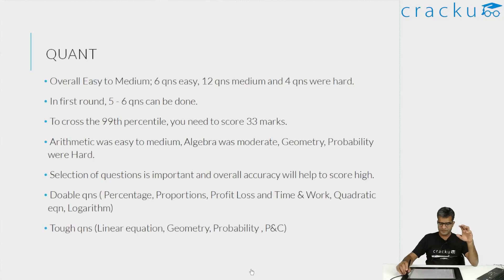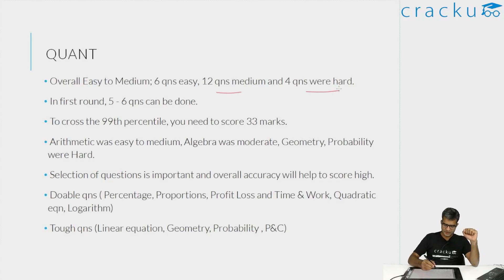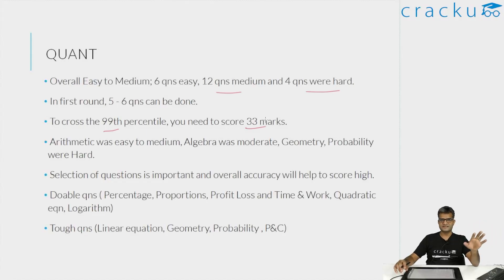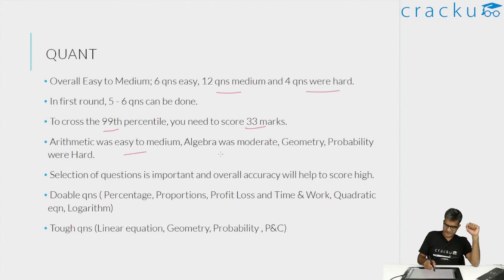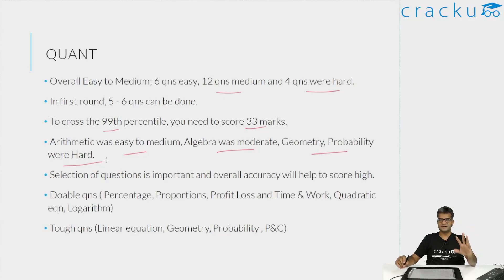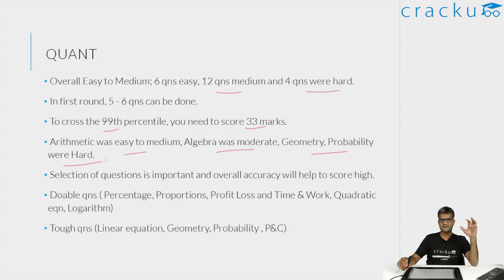Overall, out of the 22 questions, there are 6 questions which are easy — most of them in arithmetic and should be answered. 12 questions are medium and 4 questions are hard — most of the hard questions were from geometry, number systems, or probability. To get 99th percentile, if you can attempt 13 to 14 questions correct with around 85% accuracy, you will be getting 33 marks, which I think will get you 99th percentile. I always tell students to focus on the three important topics in quant: arithmetic, algebra, and geometry. If you do well in these three, most likely you will sail through quant.